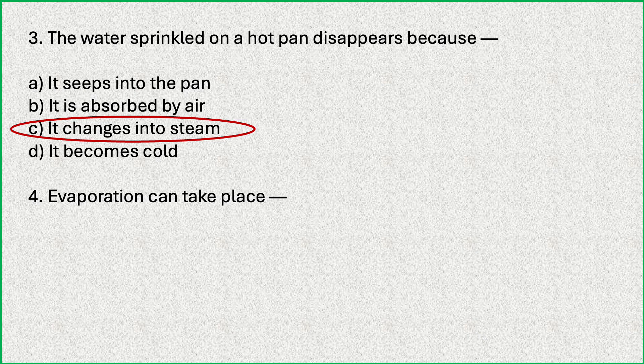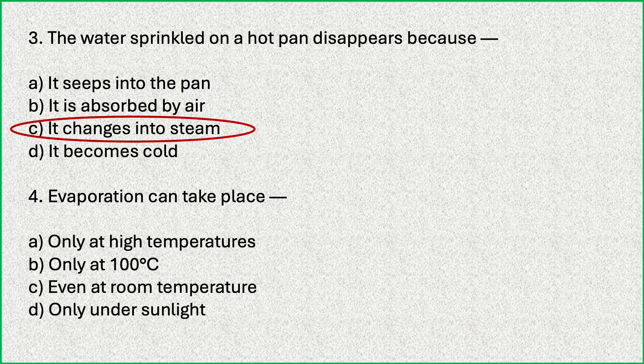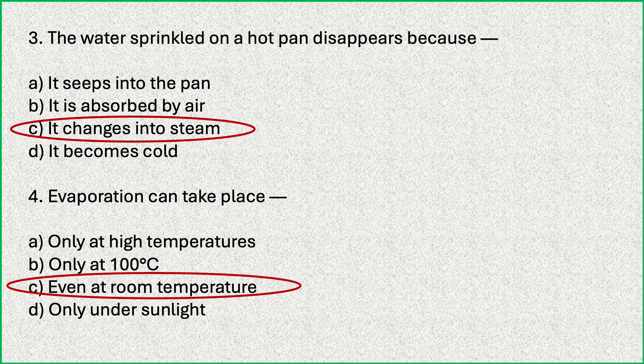Evaporation can take place only at high temperatures; only at 100 degrees Celsius; even at room temperature; only under sunlight. Which is the correct answer? The process of evaporation takes place continuously, even at room temperature.